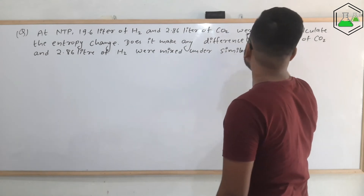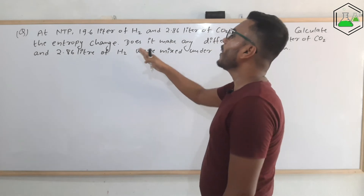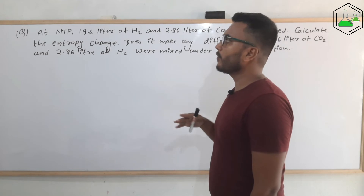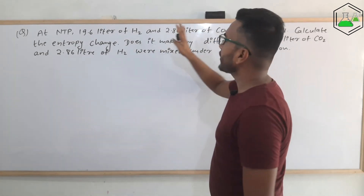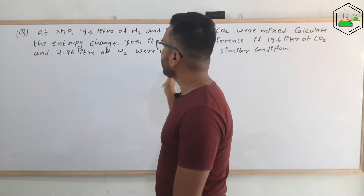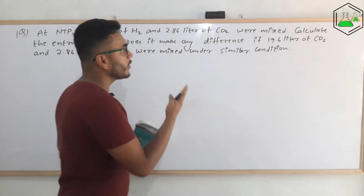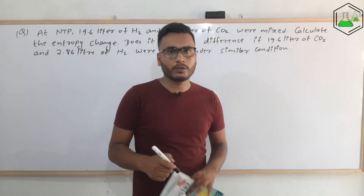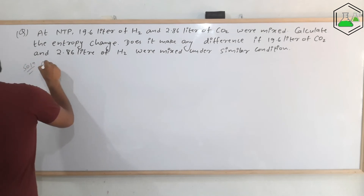We need to calculate the entropy change when 19.6 liters of hydrogen and 2.86 liters of carbon dioxide are mixed. Does it make any difference if 19.6 liters of carbon dioxide and 2.86 liters of hydrogen were mixed under similar conditions? That means the volumes are interchanged. Will there be any difference in the entropy of mixing? That is what we are going to see.